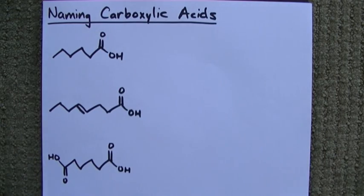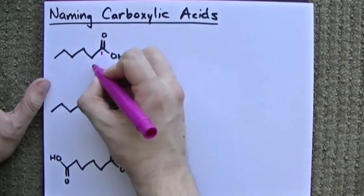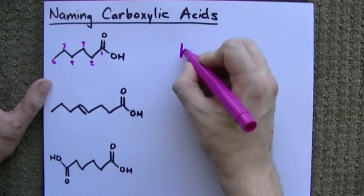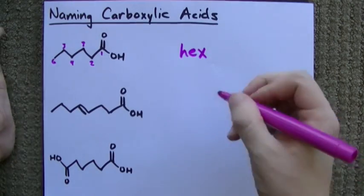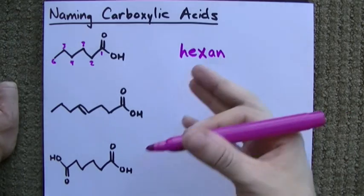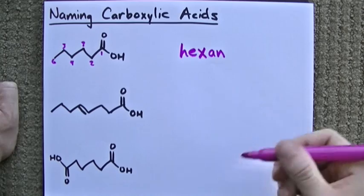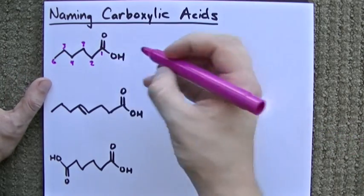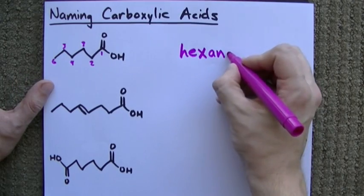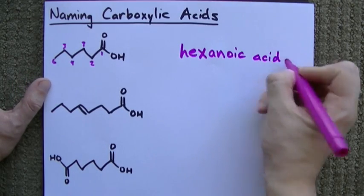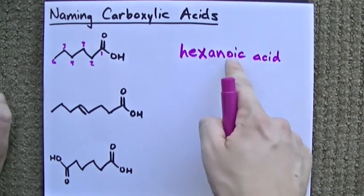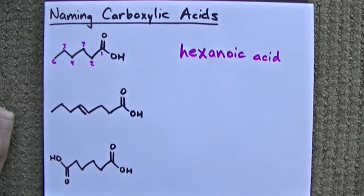So, let's take a look at how we name these. How many carbons do we have in the chain? Looks to me like we have six. You know that the prefix for that is hex. It's all single bonds, so we have an as opposed to en or ein. And because we have a COOH group at the very end, it's a carboxylic acid, and we add oic acid to the end of the name. This is hexanoic acid. Six carbons, all single bonds, COOH at the end.